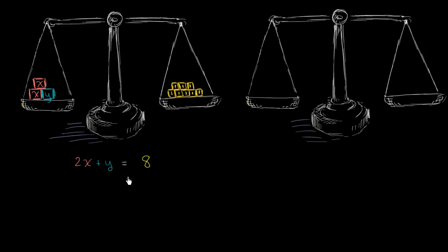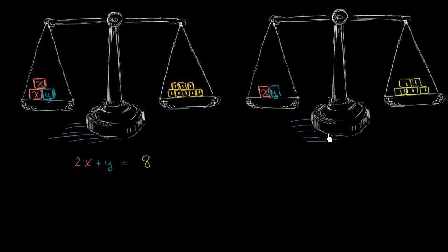Lucky for us, we do have some more blocks. We take one x block and one y block, stick them on a second scale, and keep adding one-kilogram blocks until it balances out. I find that my scale balances once I have 5 kilograms on the right-hand side. So now, having x and y on the left-hand side and 5 kilograms on the right-hand side — how can we represent that mathematically?